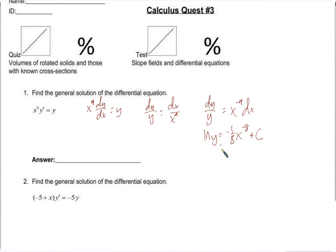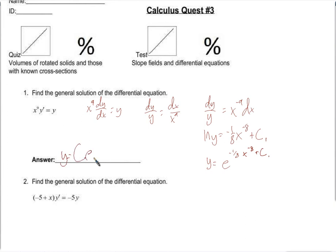We'll exponentiate both sides, meaning we'll make both sides the power of e. When we do that, here we get just y, and on this side we get e to the negative 1/8th x to the negative 8 power plus c — call it c1. We rewrite it as y equals c times e to the negative 1/8th x to the negative 8.